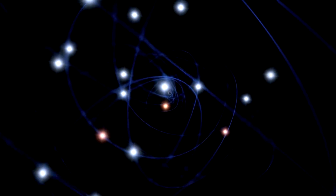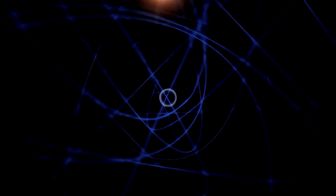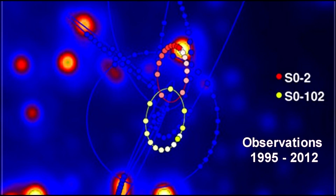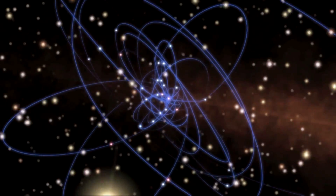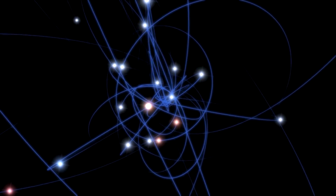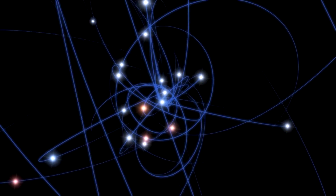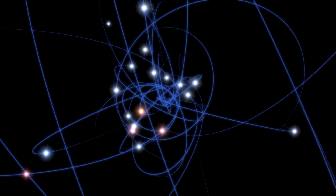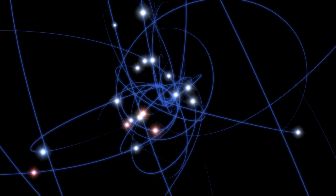Others pointed out that an extremely dense, dim star cluster could produce these results. But in 2002, S2 made its closest approach to Sag A*. If Sag A* were a cluster, S2's orbit would wobble — it did not wobble. This was the final proof point. 1,500 years after Copernicus put the Sun at the center of our solar system, this team identified Sagittarius A-star as a supermassive black hole at the center of our galaxy.